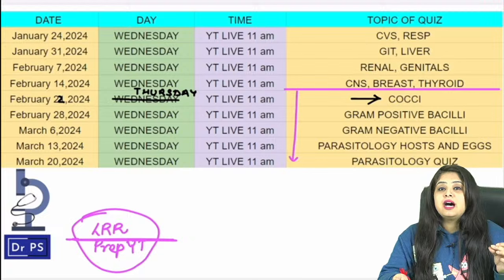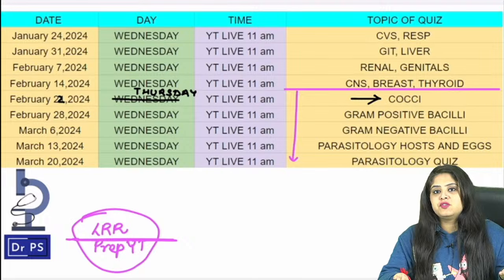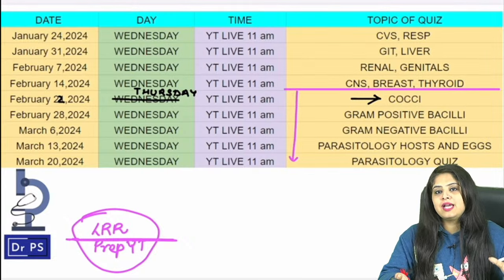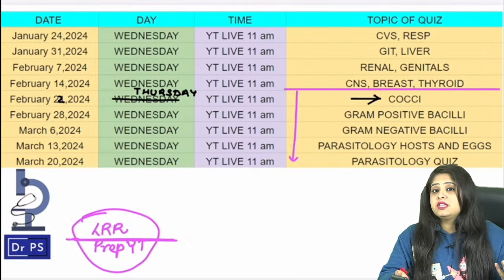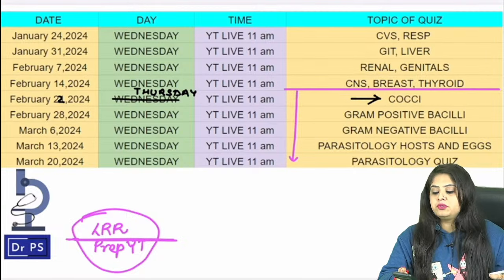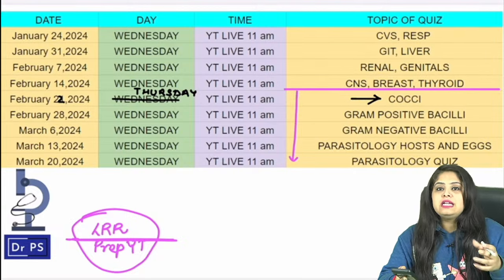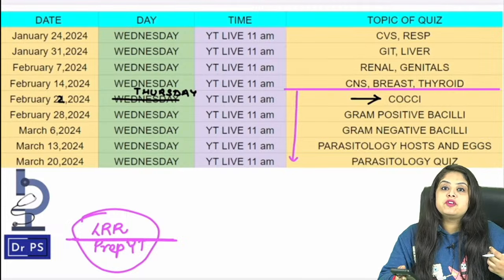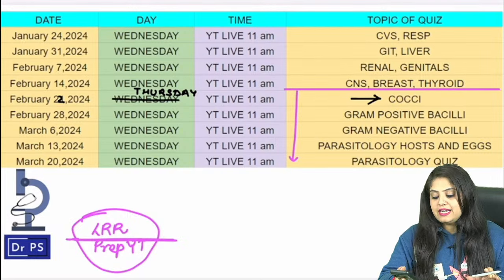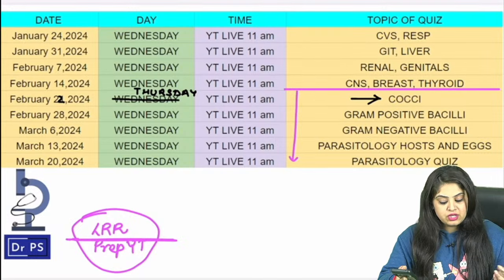Many of you asked for INI-CET specific topics. In those classes I will teach topics like electron microscopy, immunohistochemistry, flow cytometry, genetics of leukemias, and in micro — hepatitis and meningitis questions. You don't need a separate list; just follow those classes and you'll get your content side by side.